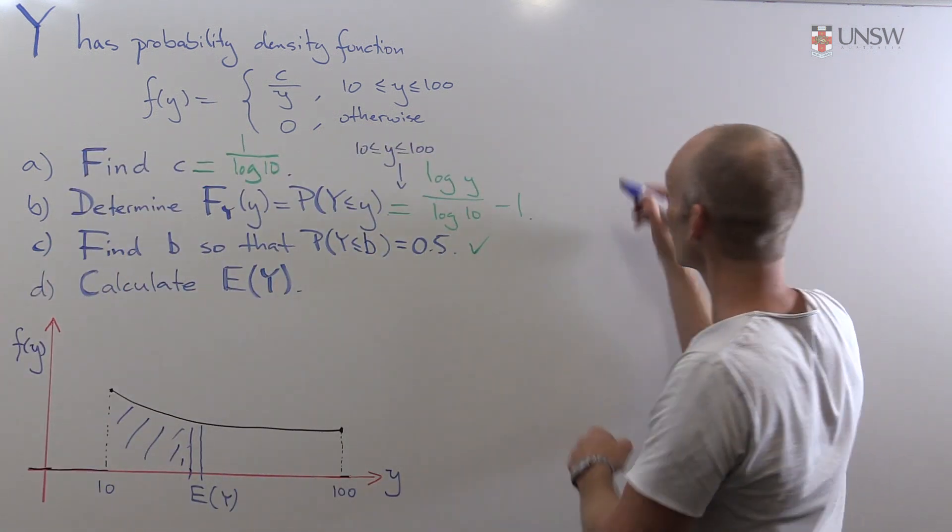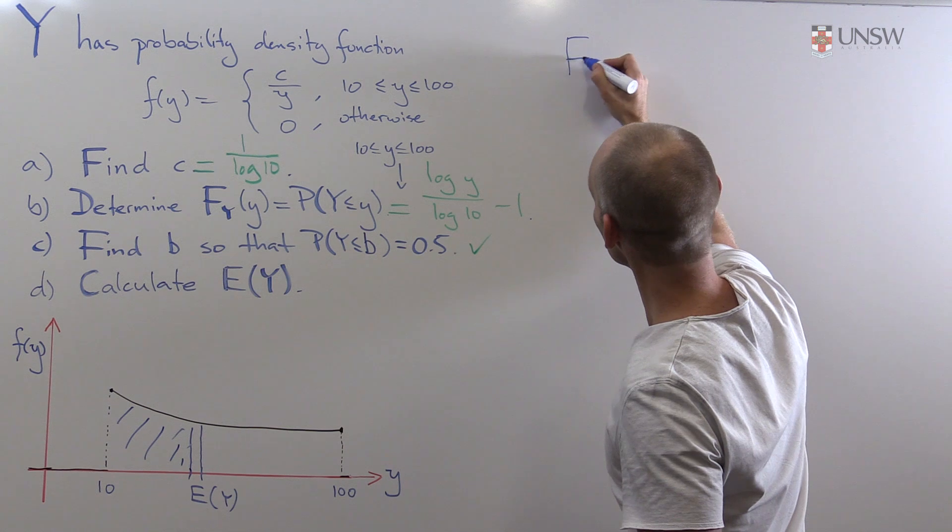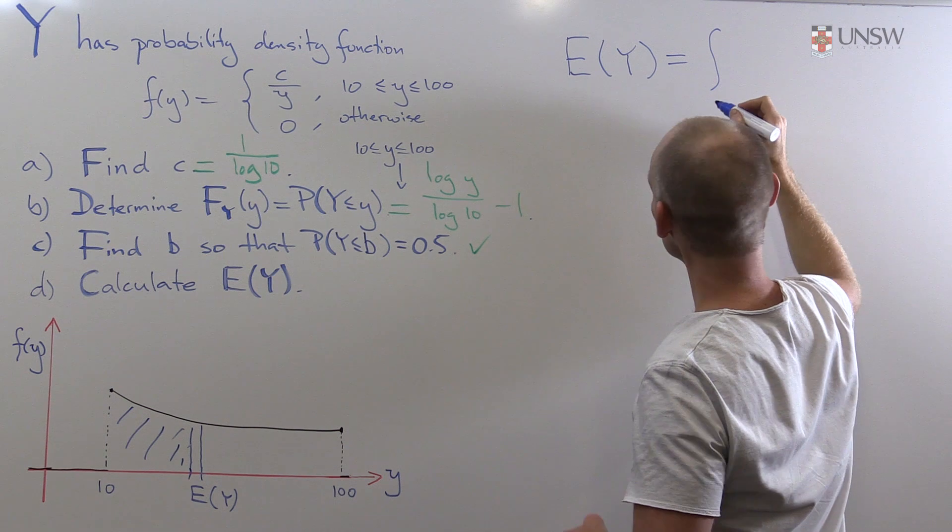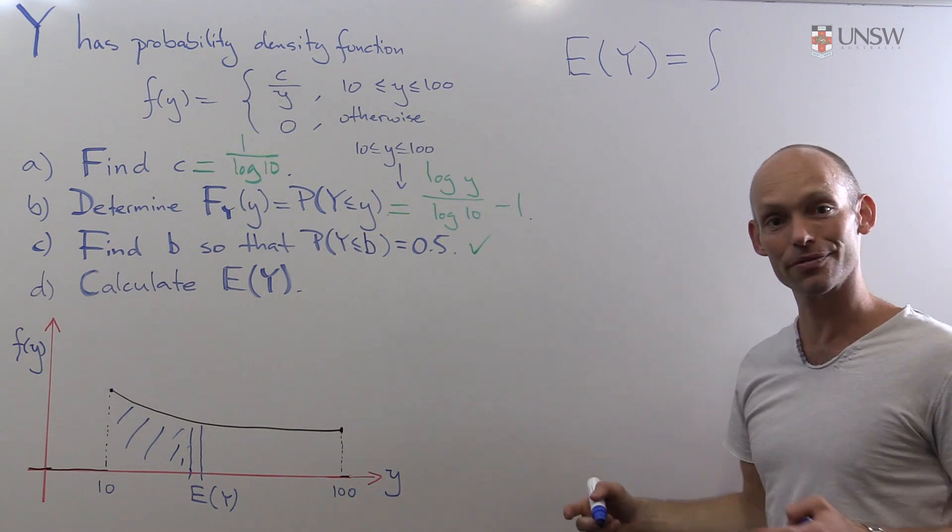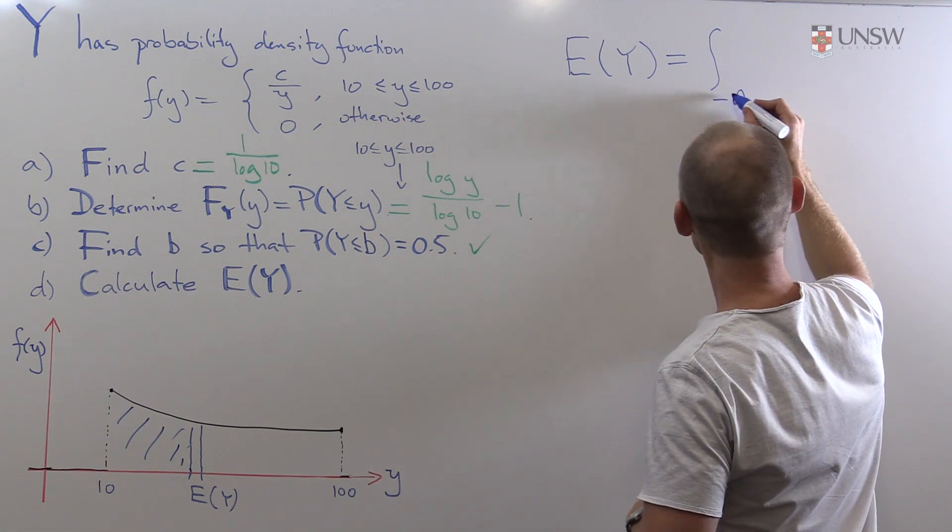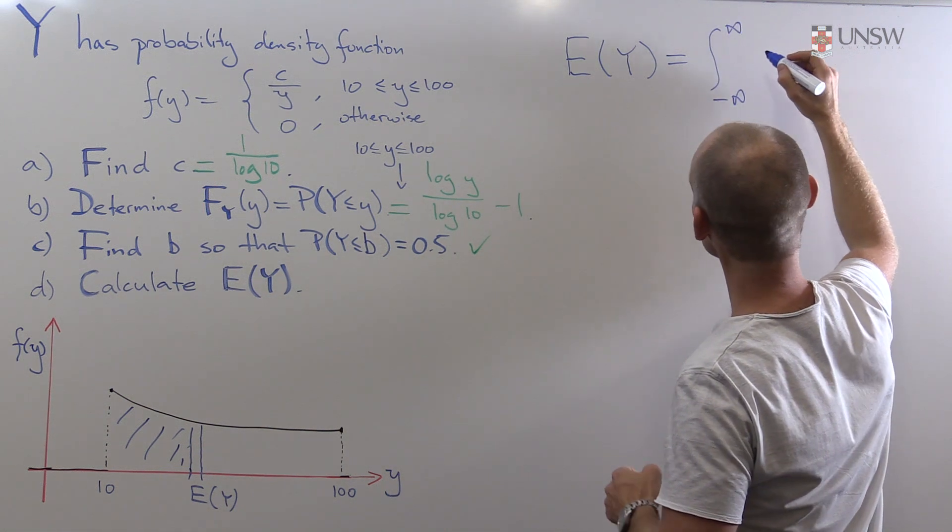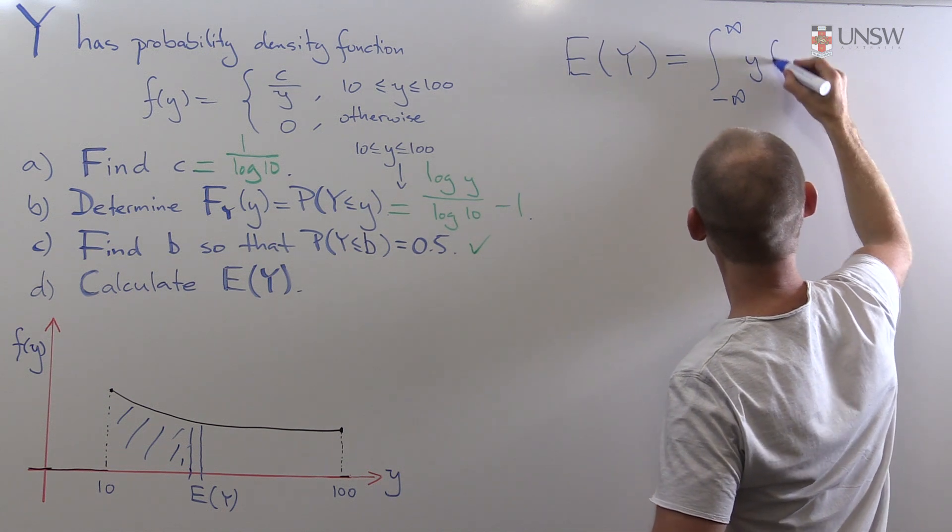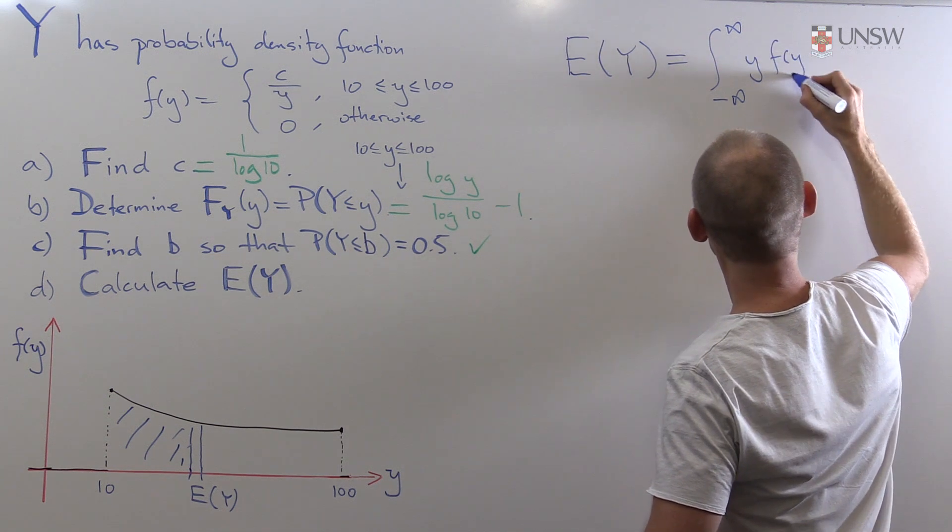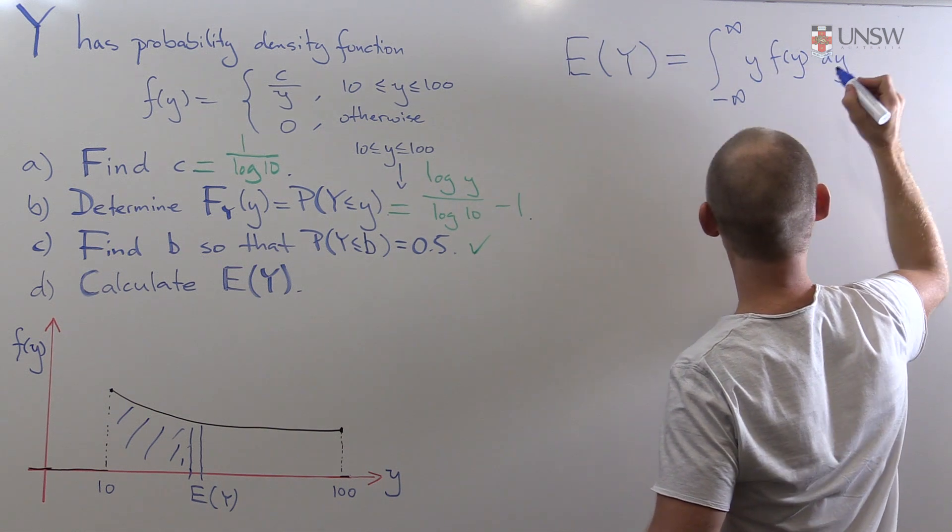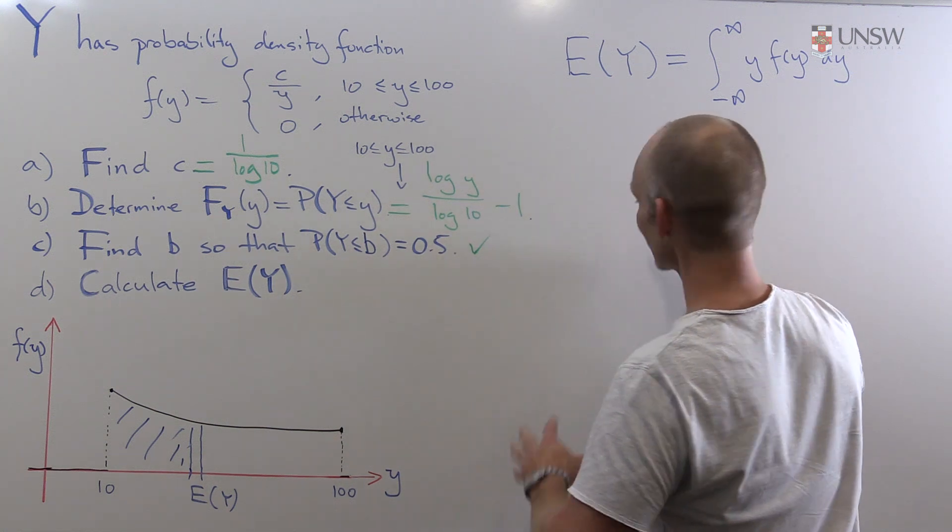Well, we have a formula that we can just use. So E of y is equal to... Well, we're adding up. We're taking a weighted average. And now our sum is going to be an integral. And it's going to be exactly the same sort of thing as for the discrete case. We take y multiplied by the... Now it's no longer the probability distribution. Now it's the density function. But otherwise it's the same thing.